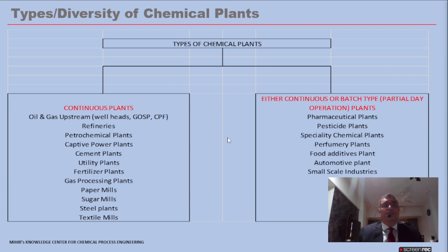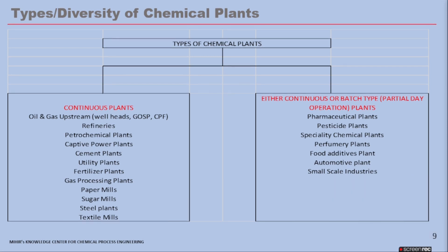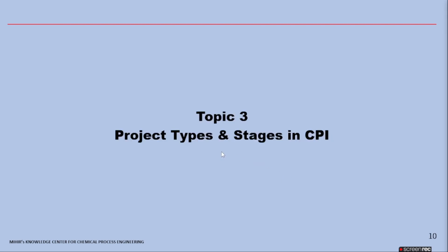The diversity of chemical plants is covered here: continuous plants and the various types falling in that category, as well as the different types of batch plants. Small-scale industry is a special type because it has many permutations and combinations — a plant may produce multiple products or run for only 12 hours a day and shut down for the other 12. Here, startup and shutdown considerations must also be factored in by the process engineer.